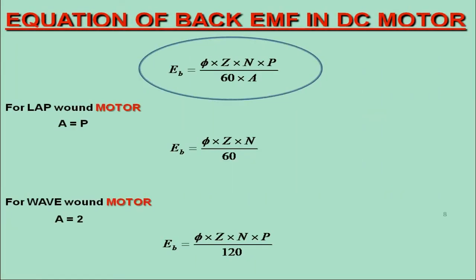Since, in case of DC motor, the generated EMF is termed as back EMF, we may write the expression for back EMF as Eb = φZNP/60A.